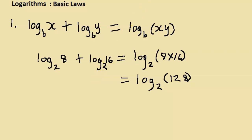We can verify this: log 8 base 2 asks what power raises 2 to get 8, which is 3. Log 16 base 2 is 4, since 2⁴ = 16. So the left-hand side is 3 + 4 = 7. On the right, log 128 base 2 asks what power raises 2 to get 128, which is 7. Both sides equal 7.